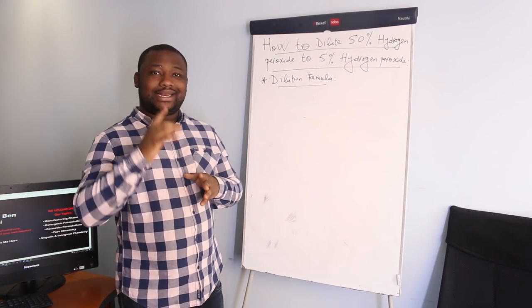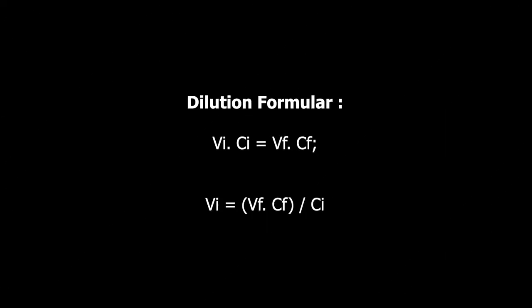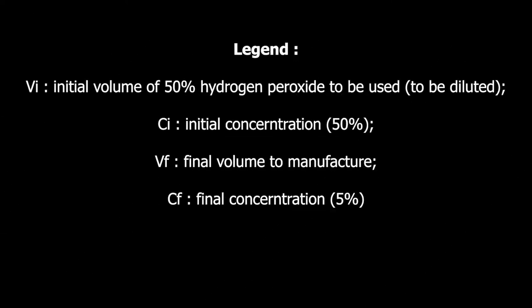Here we go with the dilution formula. The dilution formula says that VI times CI is equal to VF times CF. The aim here is to make VI the subject of the formula: VI equals VF times CF over CI.